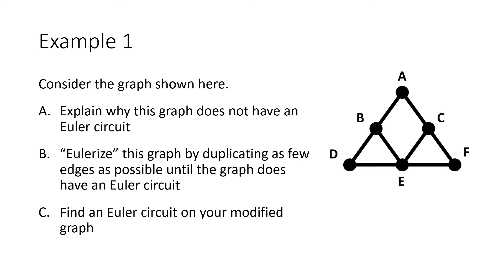Here's an example where we're given a graph, asked to explain why it does not have an Euler circuit, then do the Eulerizing process, and find an Euler circuit on that modified graph. We explain why by looking at the degree of every vertex — counting the number of edges into each point. A has degree 2, B has degree 3. We could stop there: we've found a vertex with an odd degree, so we know the graph doesn't have an Euler circuit.